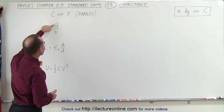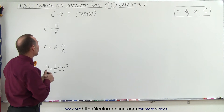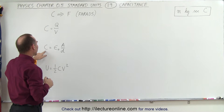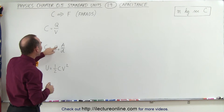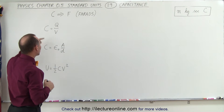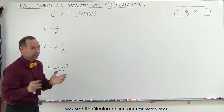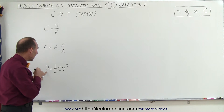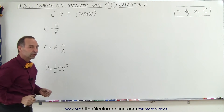Capacitance is equal to the charge collected on the capacitor plates divided by the voltage driving that charge onto the plates. Or we can use the physical dimensions of a capacitor, saying that the capacitance is equal to epsilon-naught — the permittivity of free space — times the surface area of the plate divided by the distance between the plates. We're going to calculate the units for both definitions, and then calculate the energy stored on a capacitor using the equation one-half capacitance times voltage squared.